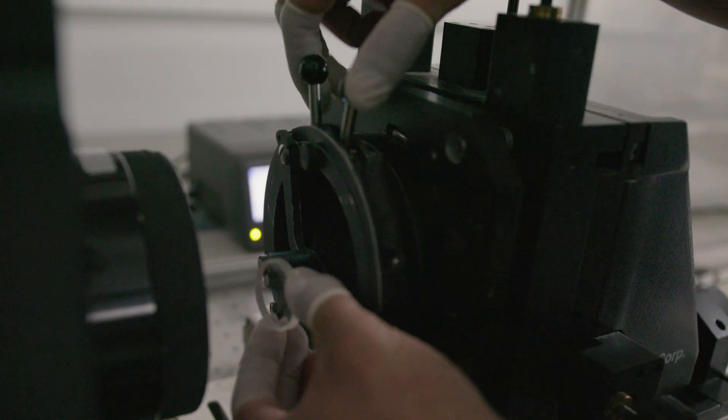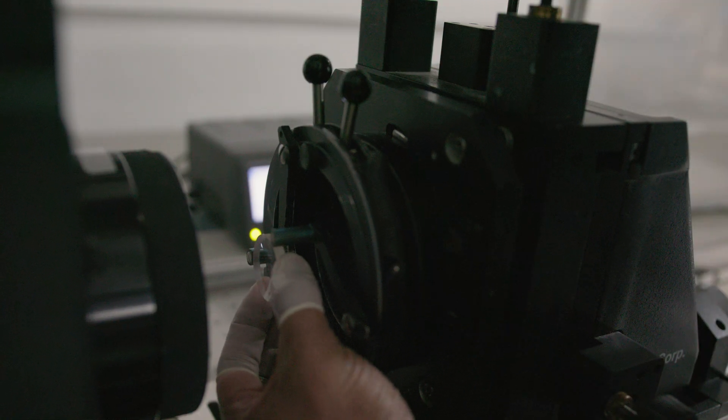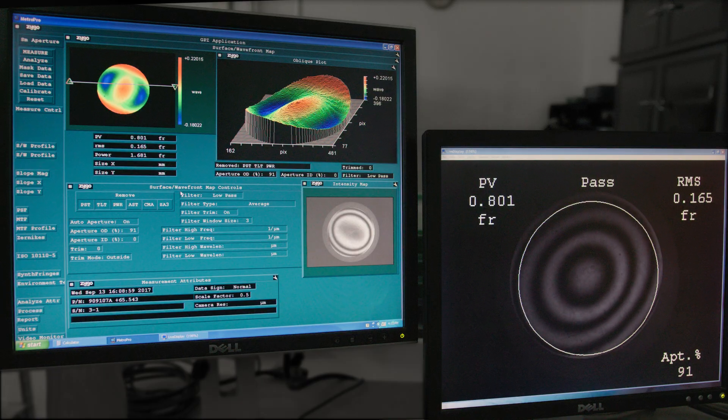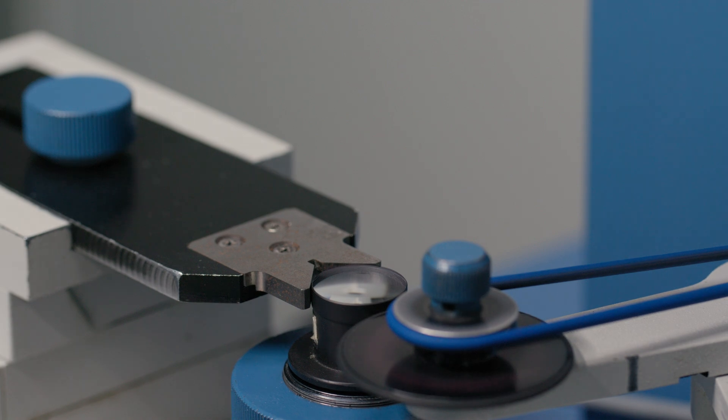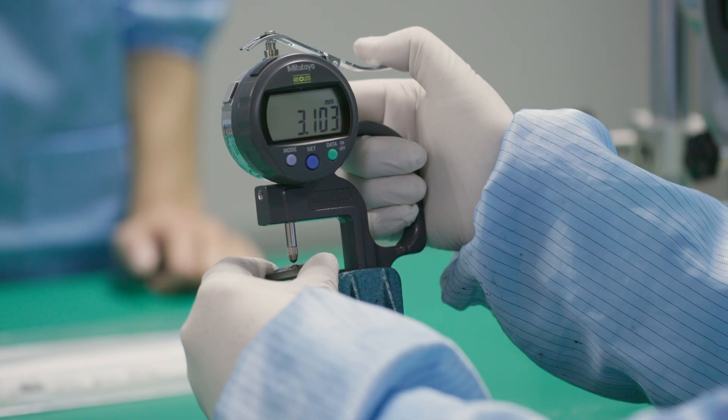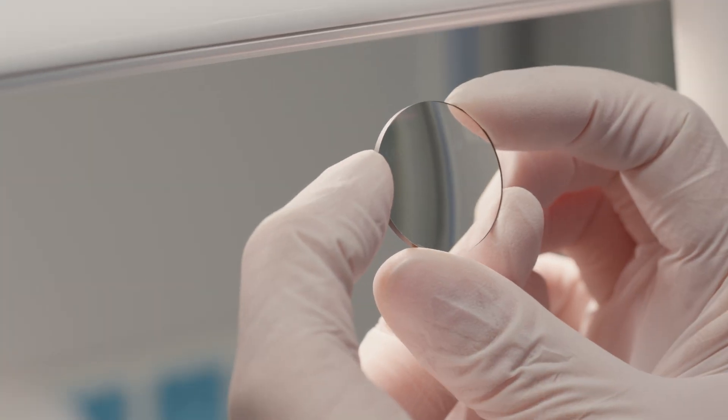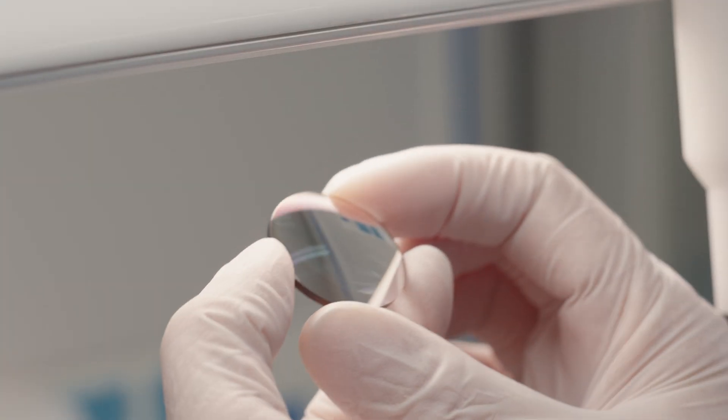In-process metrology, such as interferometry, ensures that all optical and mechanical specifications are met, including surface accuracy, centration, and center thickness. Optical lens elements are manufactured to extreme precision.